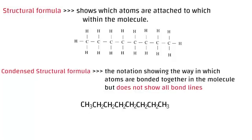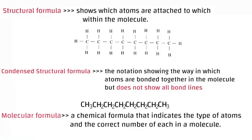Now the molecular formula. A chemical formula that indicates the type of atoms and the correct number of each in a molecule. Since there are 8 C atoms on our structural formula, this would be C₈. And 18 H atoms, this would be H₁₈. So the molecular formula is C₈H₁₈. You have to know the difference between structural formula, condensed structural formula, and molecular formula.